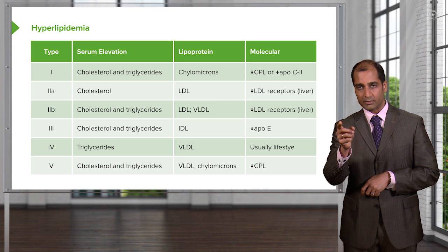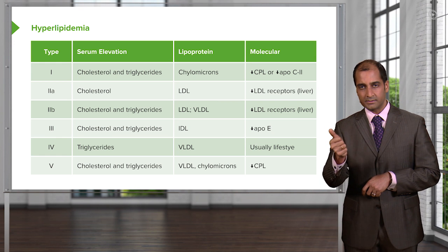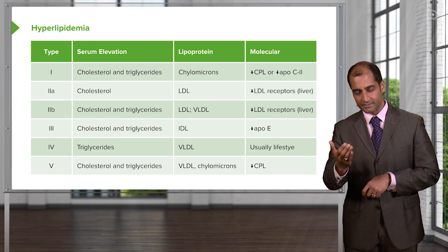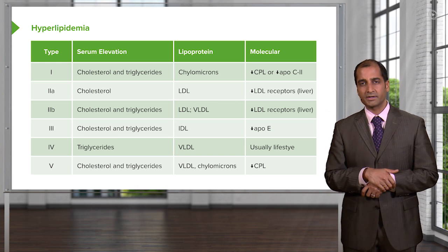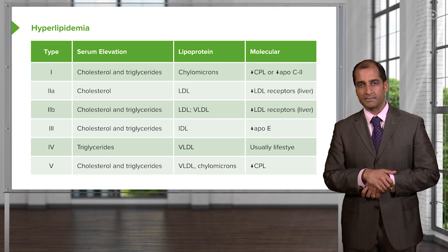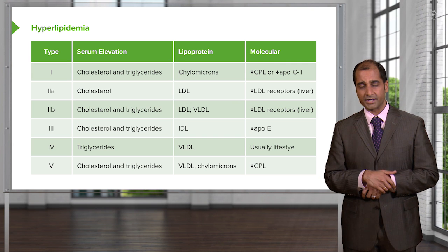Take a look at the molecular column for Type 1. It's the fact that ApoC2 and lipoprotein lipase are completely deficient. If that's the case, what lipoprotein are you going to accumulate? Chylomicrons. And what are you going to increase in your patient? Triglycerides.